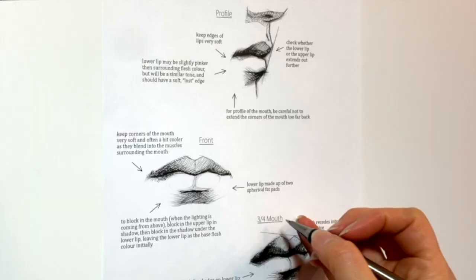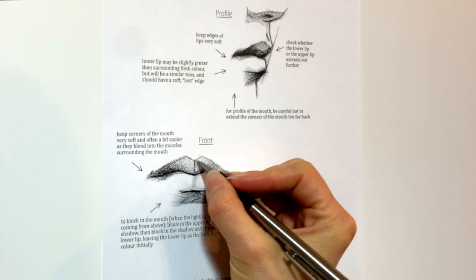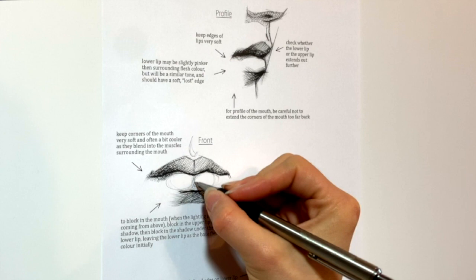In terms of the anatomy of the mouth, with the upper lip, we've got the tubercle here, which is kind of the bend in the upper lip. We've got the wings of the upper lip on either side. We've got the philtrum, which is the little divot above the upper lip. And then the lower lip is made up of two circular fat pads, so you get a little divot in the center of the two.